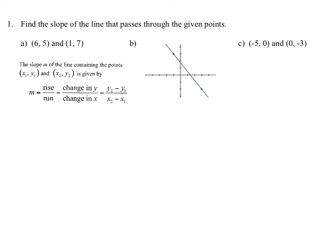Let's use the formula to find the slope for part a. We label the first point as (x₁, y₁) and the second as (x₂, y₂). The slope is y₂ minus y₁, which is 7 minus 5, divided by x₂ minus x₁, which is 1 minus 6. Simplifying, the numerator gives 2 and the denominator gives negative 5. It's standard to write the slope as the fraction negative 2 over 5.